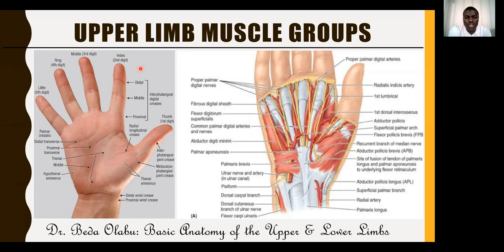In summary, there are four muscle groups in the hand: thenar muscles (3), hypothenar muscles (3), interossei (7), and lumbricals (4). Even though the hand is small, there are many muscles there.